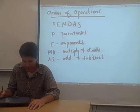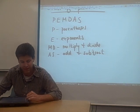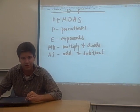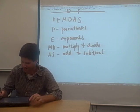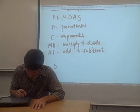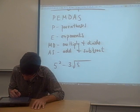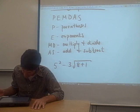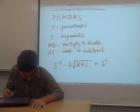So the first thing that you do when you're simplifying an expression is look at the parentheses and simplify those first. Then you carry out all exponents. Then you multiply and divide. Then you add and subtract. So let's do an example. Say we have an expression like this: five squared minus three times the square root of eight plus one, plus two to the zero.